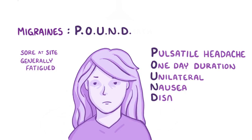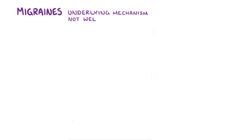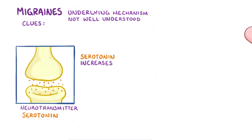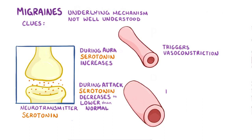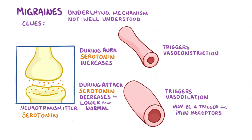Although the underlying mechanism causing migraines isn't well understood, there are some clues. Concentrations of the neurotransmitter serotonin increase during the aura, triggering vasoconstriction, and then decrease to lower than normal levels during the migraine attack, triggering vasodilation. This change in blood vessel size may trigger pain receptors, causing the headache. The initial vasoconstriction may also trigger cortical spreading depression, a phenomenon where the brain becomes hypersensitive to stimuli like lights, sounds, and smells.